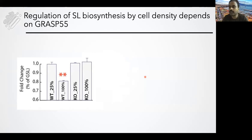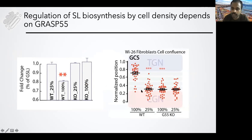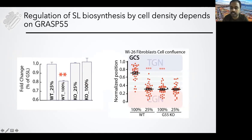We then took GRASP55 knockout fibroblasts and saw what happens. While control fibroblasts showed a change from high glycosphingolipids in sparse conditions to low glycosphingolipids at confluence, this change was not seen in GRASP55 knockout fibroblasts. GRASP55 plays a role in this confluence-induced change. In control fibroblasts, in the sparse condition GCS was on the cis side, and in the confluent condition it went to the trans side of the Golgi. This change in localization was not present in GRASP55 knockout fibroblasts, where GCS was always present on the cis side.